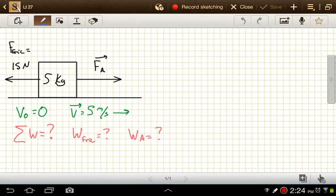Some of these problems you might see using the weight of that box to find the normal force, and then they'd give you the coefficient of friction, and you have to solve for the force of friction. But I've simplified this one a little bit and just given you the 15 newtons. We're also given that it has a starting speed of V0 equals zero, and an ending speed of 5 meters per second going to the right here in the direction of that applied force.